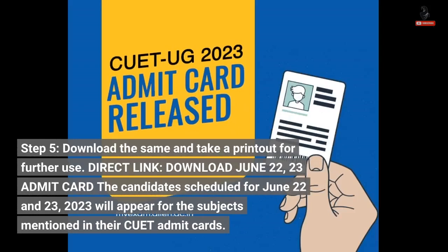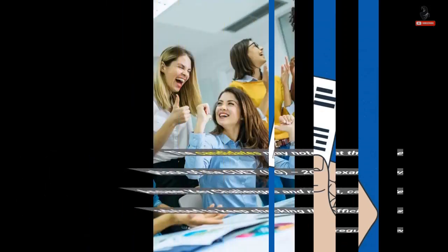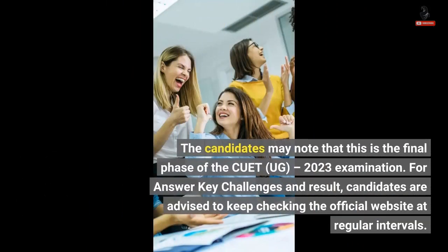Direct link: Download June 22, 2023 Admit Card. The candidates scheduled for June 22 and 23, 2023 will appear for the subjects mentioned in their CWIT Admit Cards. Candidates may note that this is the final phase of the CWIT UG 2023 examination. For answer key challenges and result, candidates are advised to keep checking the official website at regular intervals.